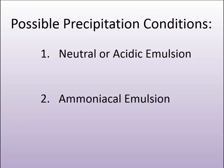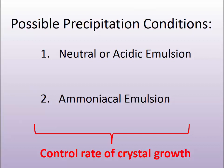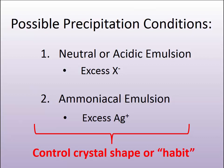Both of these conditions control the rate of growth. In one condition, we have an excess of halide — the acid emulsion. In the other, we have an excess of silver. These will determine the crystal shape, or what is known as the crystal habit, in the emulsion-making process. Remember this point as we move forward, and you'll begin to see where it becomes important which condition we choose and which process we use to produce a silver halide emulsion.